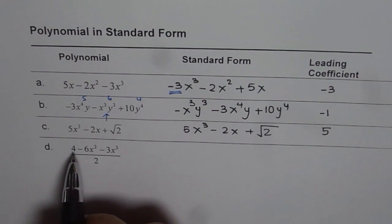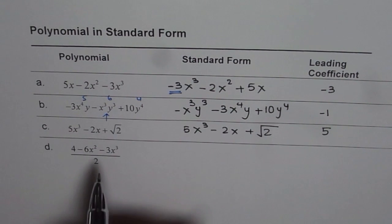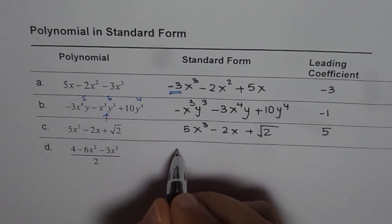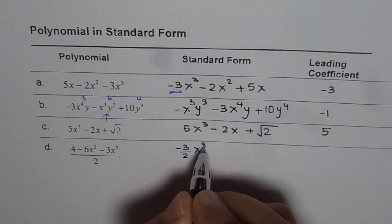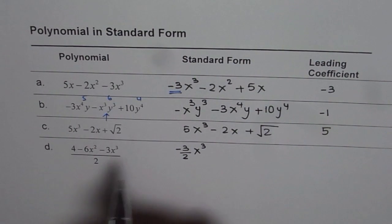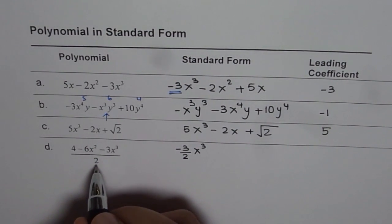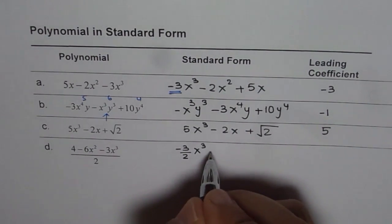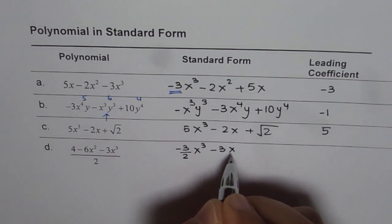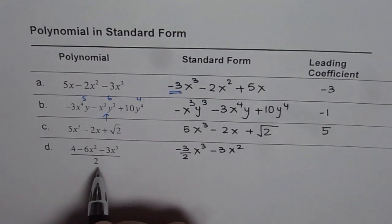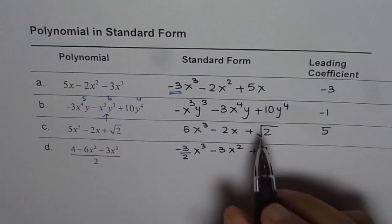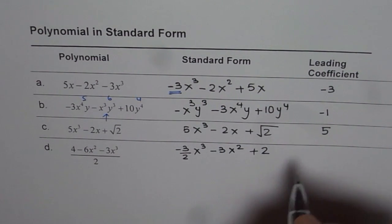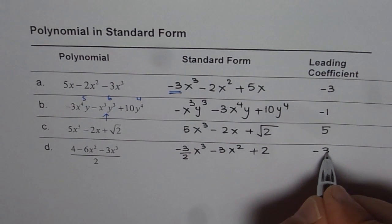we'll divide each term by 2 and write them separately. We have minus 3 over 2 x cubed. That is our first term. The second term will be minus 6 divided by 2, which is minus 3, so we get minus 3x squared. And 4 divided by 2 is 2, plus 2. In this particular case, the leading coefficient is minus 3 over 2.